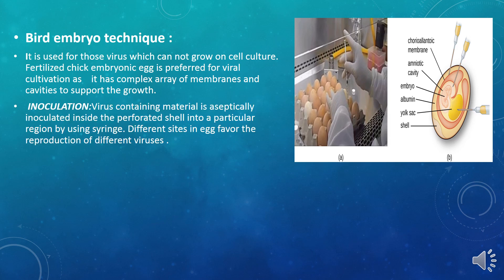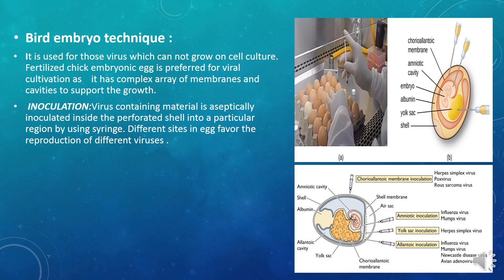Firstly, virus is aseptically inoculated through the help of a syringe or injection inside the perforated egg shell, into a particular specific region — because an egg has different sides that favor the reproduction of different viruses. In this picture, herpes simplex and Rous sarcoma virus are being inoculated into the chorioallantoic membrane, while influenza and mumps virus are inoculated into the amniotic region.